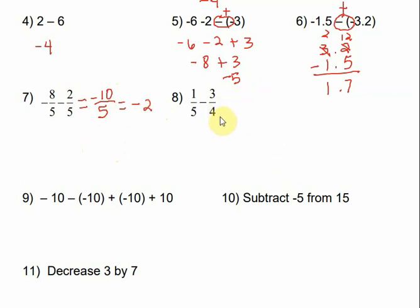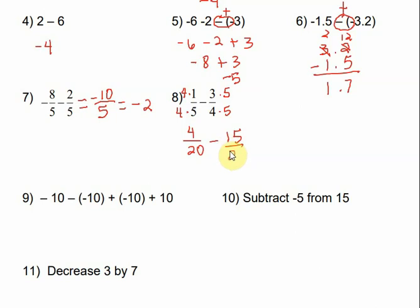Number 8: we don't have a common denominator, so let's find one. The least common denominator between 5 and 4 is 20. To get 20 from 5, multiply by 4 — do the same to the numerator. To get 20 from 4, multiply by 5. That gives 4/20 minus 15/20, so the denominator is 20. Since 4 and negative 15 have different signs, I subtract and get 11, but it's negative because the bigger number is negative, giving negative 11/20, which does not reduce.